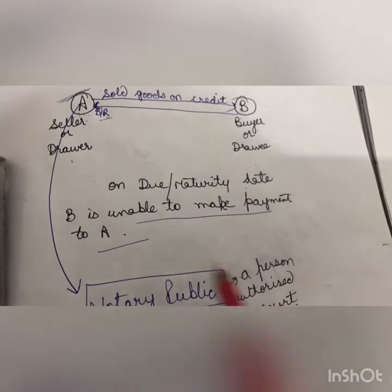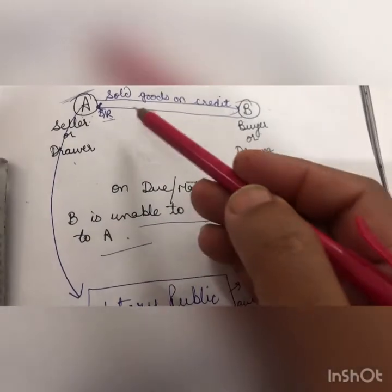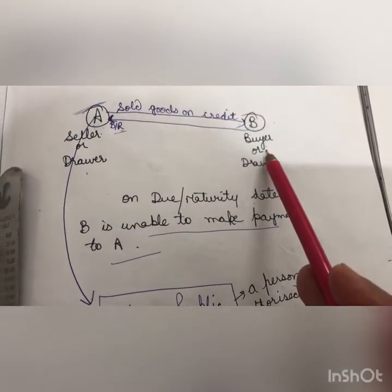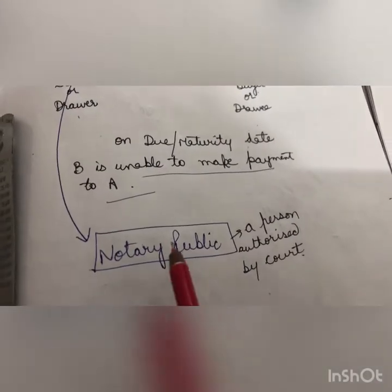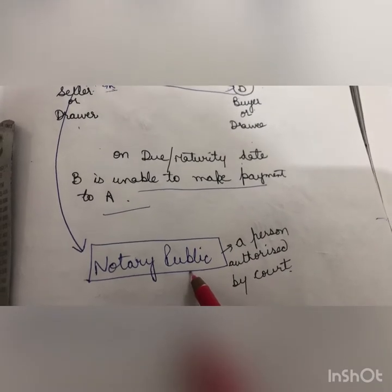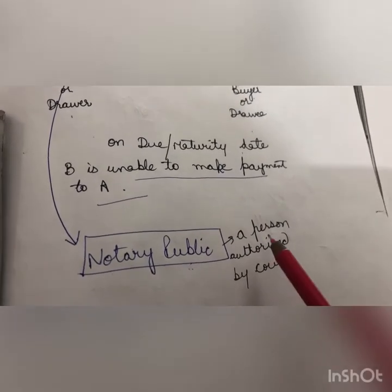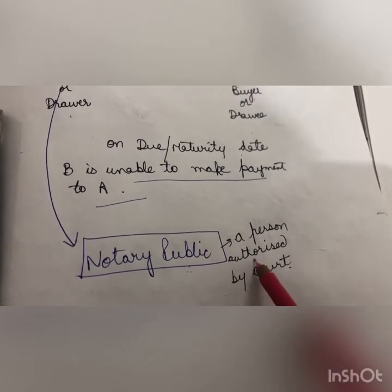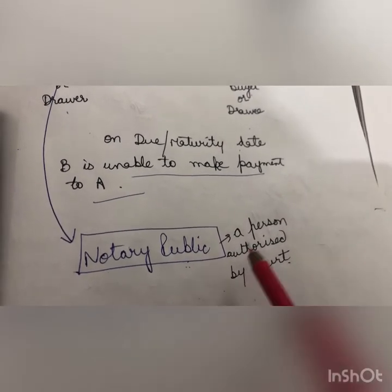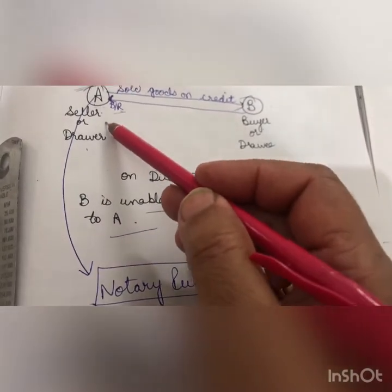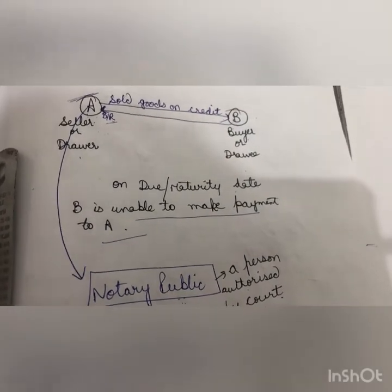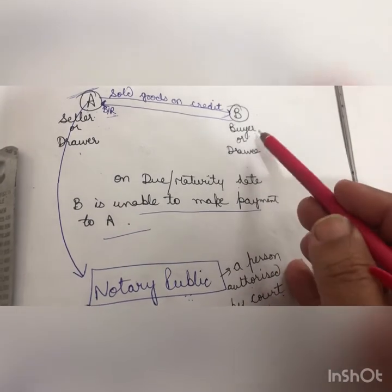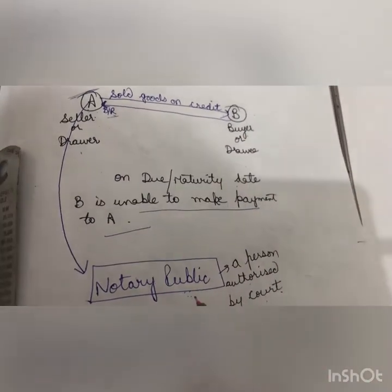B has refused to give payment to A. After many reminders, B still hasn't paid. Now A will go to the notary public. The notary public is a person authorized by the court — a court-appointed person. A, the seller who didn't receive payment on the due date, will go to the notary public and explain that B has not made the payment.